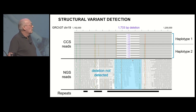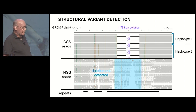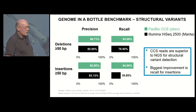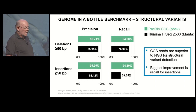With short reads, particularly in regions where you have repeat structures — indicated by the bar at the bottom — you frequently miss deletions and other variants. Looking at structural variants overall, we were able to get quite good recall and precision both for deletions and insertions, compared to what you can get with short read data, particularly an improvement relative to insertions.